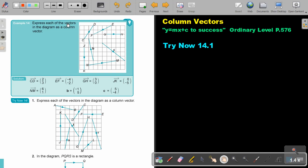Express each of the vectors in the diagram as a column vector. Remember, it's the horizontal movement over the vertical movement.